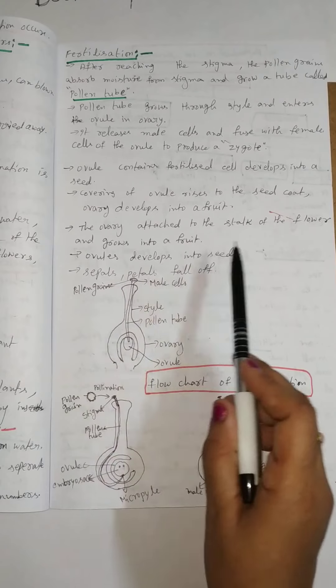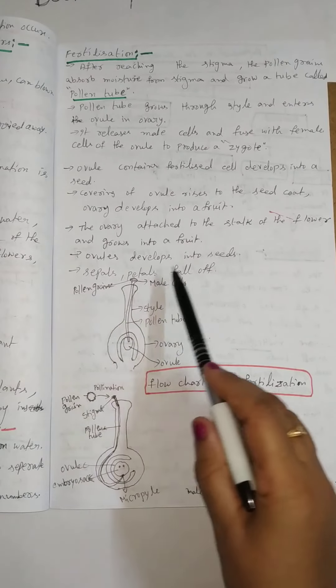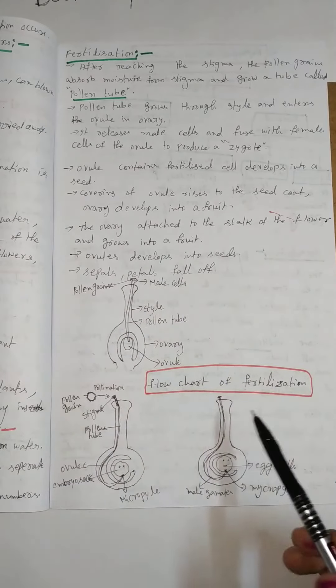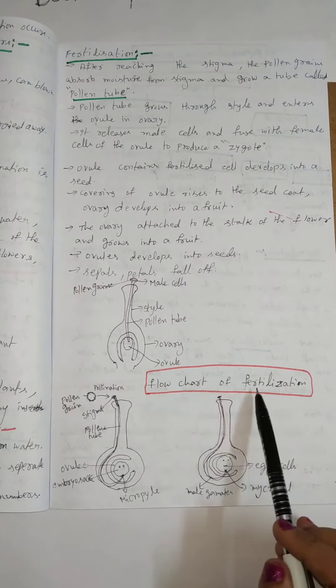Ovules develop into seeds. These petals fall off. This is the flow chart of fertilization.